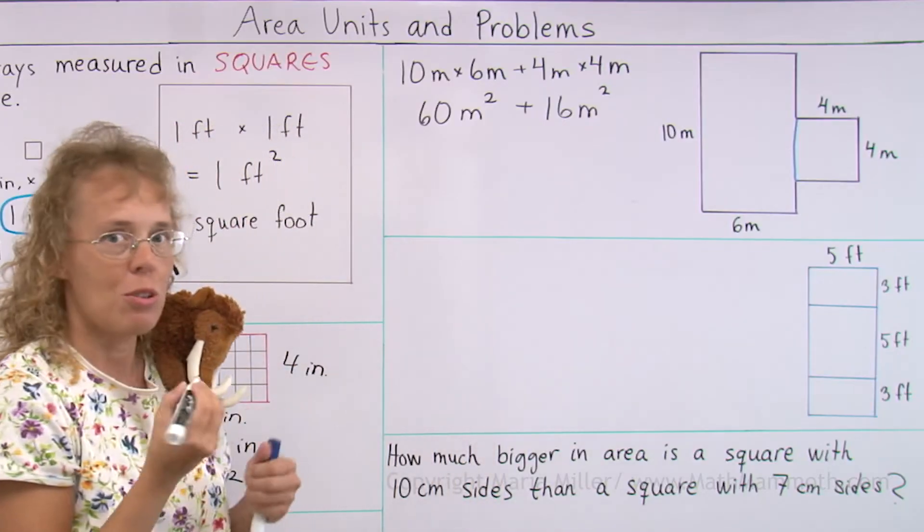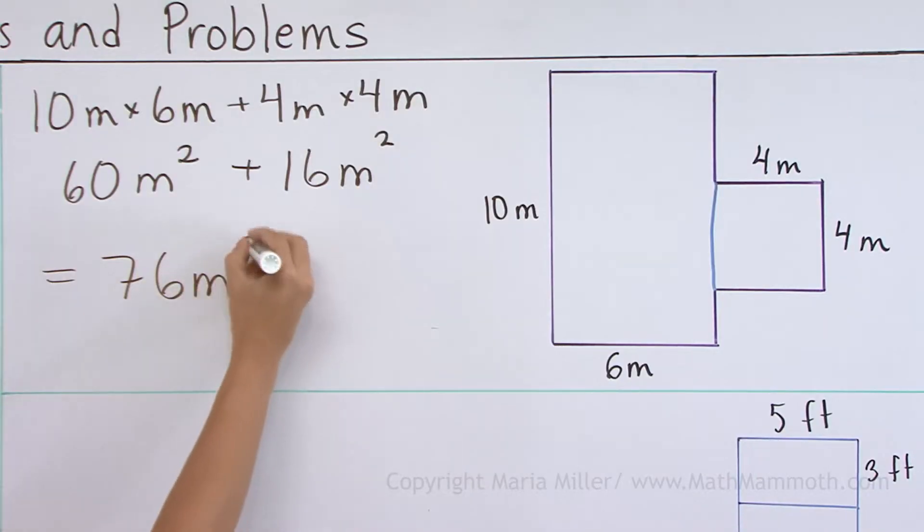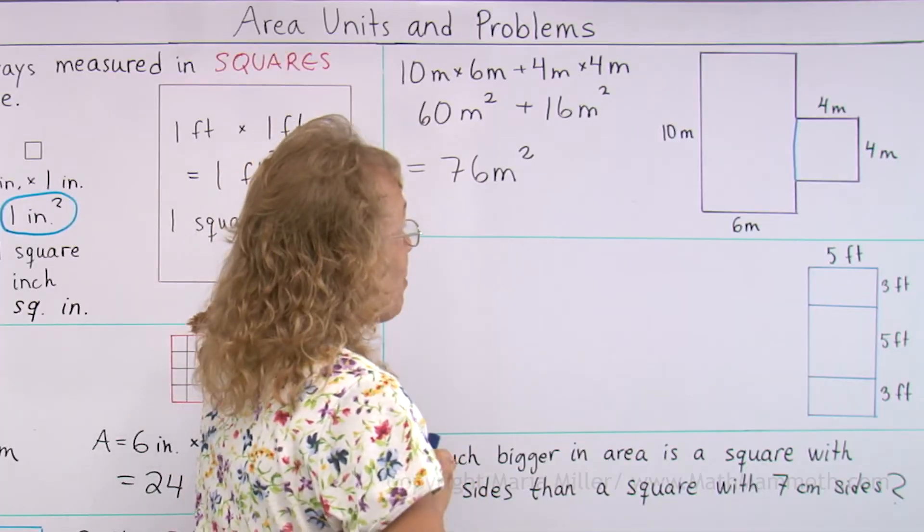You need to write those square meters here and here. And then you add, we get 76 square meters. Okay, it's a big room.